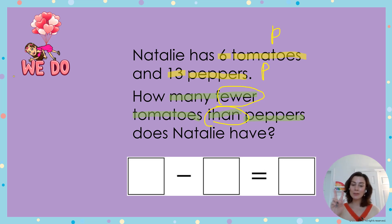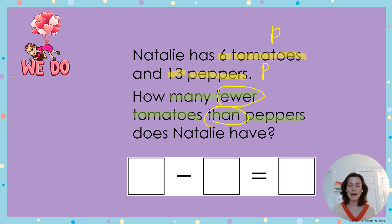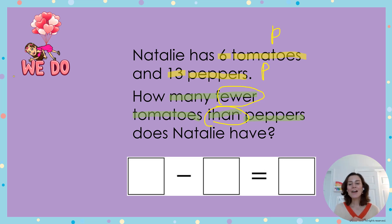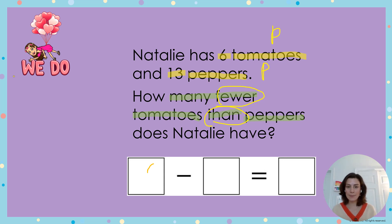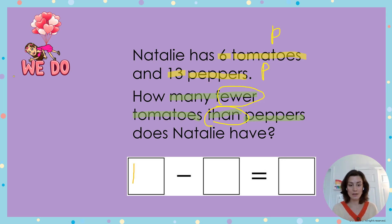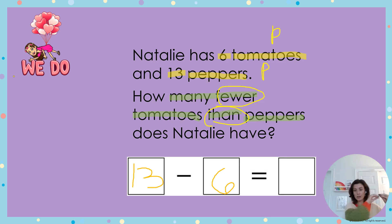Now we're going to move on to step two — Plan It. I'm using the number sentence strategy: square minus square equals square. I would love it if you could write that on your board. Pause the recording and press play when you have that. Now let's plug in what we know: I have 6 tomatoes and 13 peppers as my parts. In a subtraction sentence I need to write the larger number first when subtracting.